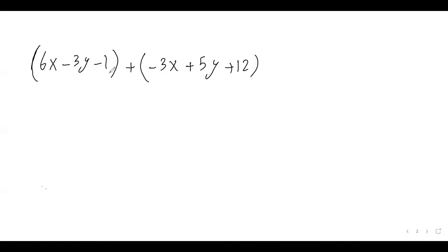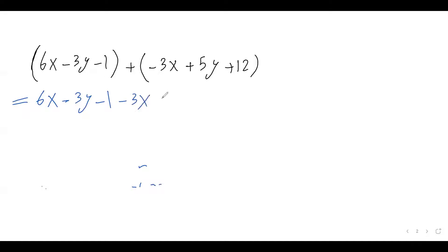So this equals to 6x minus 3y minus 1. We drop this bracket, so plus negative 3x is just minus 3x, and then plus 5y plus 12. And then the next thing we need to do is to collect like terms.